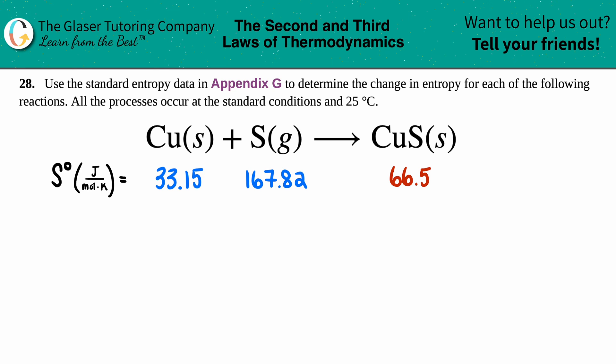Number 28. Use the standard entropy data in Appendix G to determine the change in entropy for each of the following reactions. All the processes occur at the standard conditions and at 25 degrees Celsius.